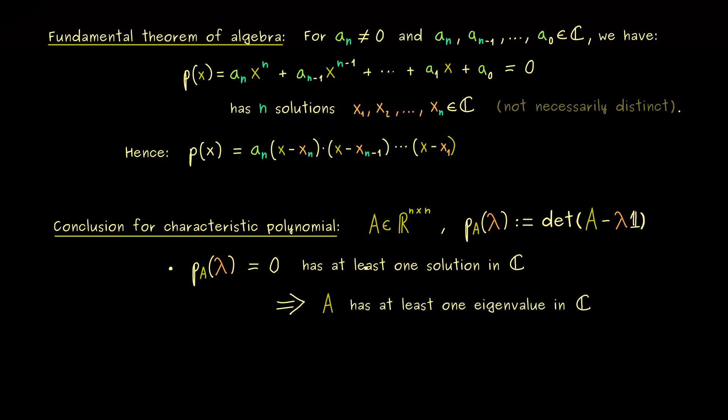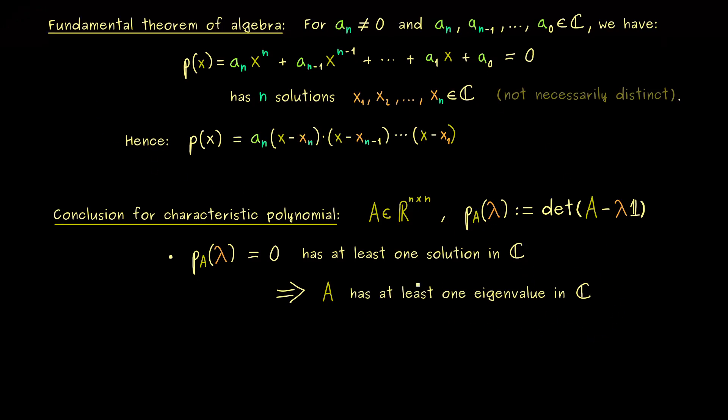However, the thing is even for a real valued matrix this eigenvalue could be strictly complex. That's the reason why it's very helpful to expand linear algebra to the complex realm. Because there the whole eigenvalue theory gets simpler. Okay, so for this fact here I can immediately give you an example.